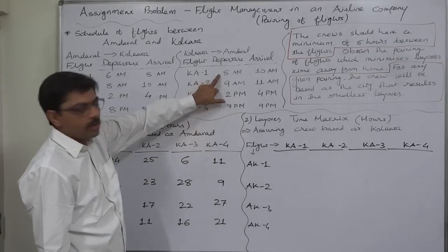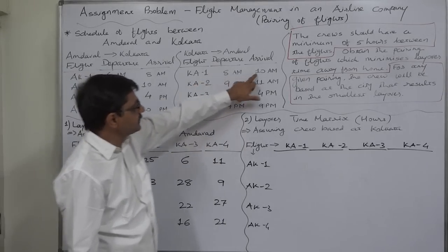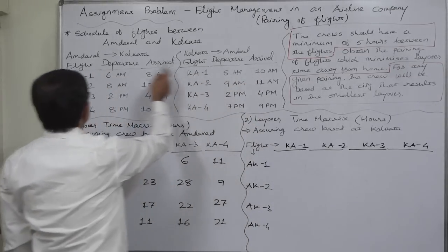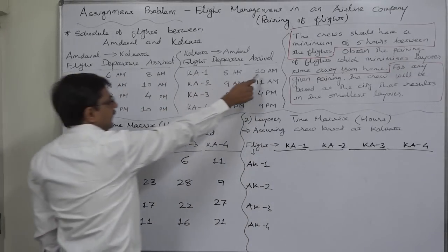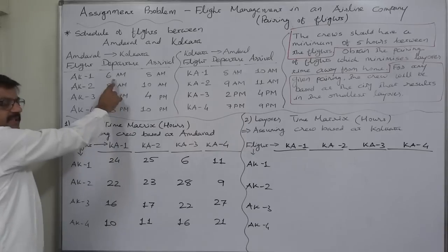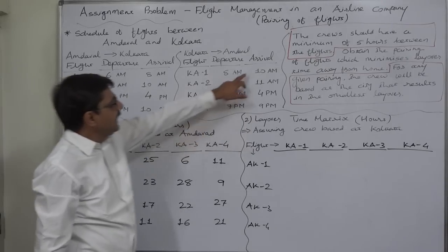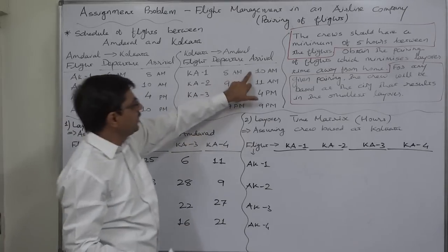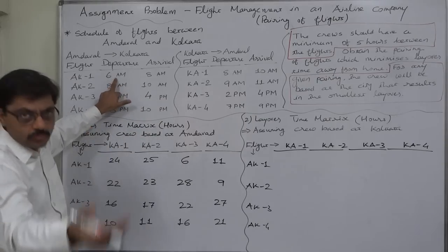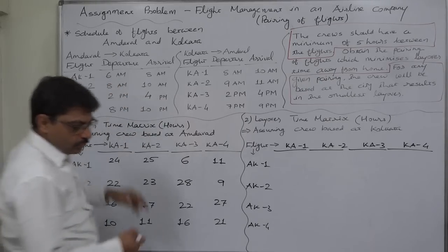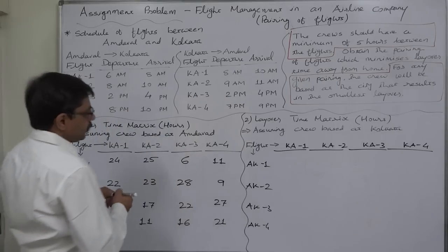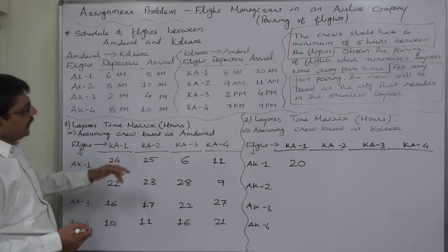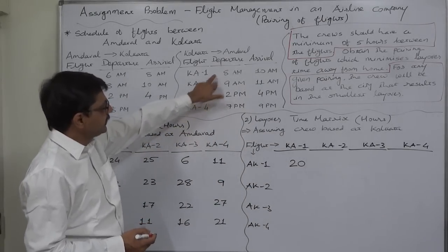KA1 starts from Kolkata at 8 a.m. and reaches Ahmedabad at 10 a.m. Now if KA1 becomes AK1, the layover time is 10 a.m. today to 6 a.m. tomorrow or next day, so it will be 24 minus 4 — that is 20 hours.